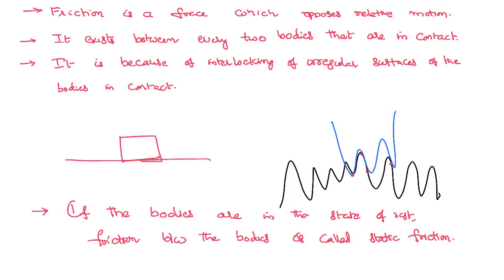Kinetic friction is a little bit less than static friction. Further, when one body is rolling over the other body, the probability of interlocking will be much lesser. Therefore the rolling friction will also be less. To sum up, there are three kinds of friction: static friction exists between two bodies in the state of rest; kinetic friction exists when at least one body is in the state of motion; rolling friction is when one body is rolling over the other body. Among all the frictions, static friction is the highest and rolling friction is the lowest.